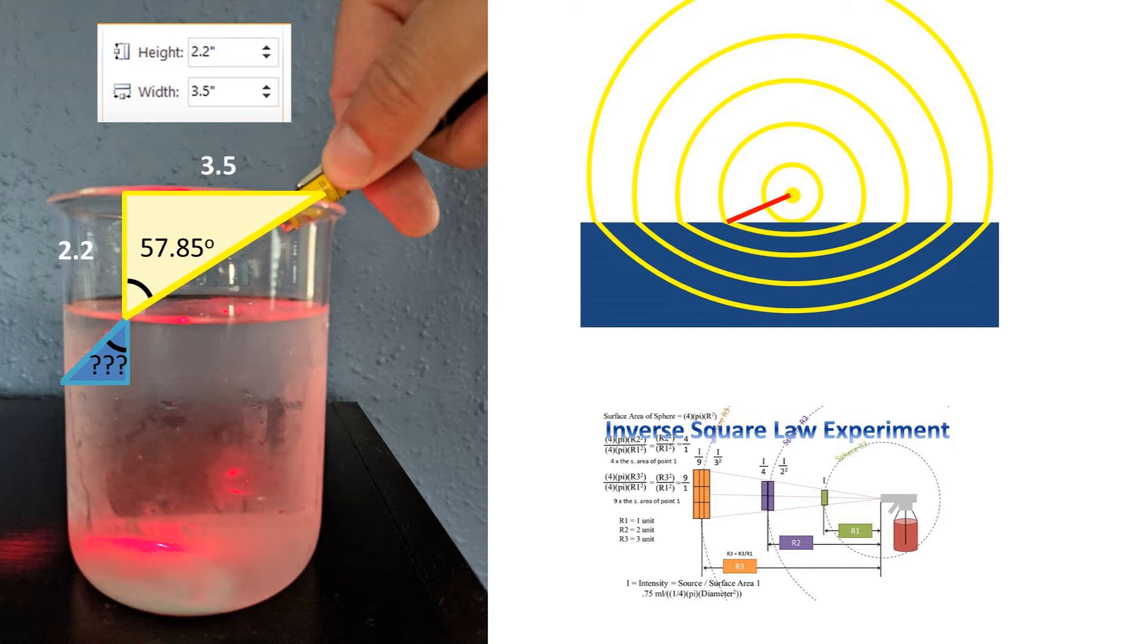First, the laser travels out from the source as the sphere above the water propagates. Then it hits the water and starts to propagate from the source as the sphere below the water propagates. So in order to do this, it must change directions slightly.